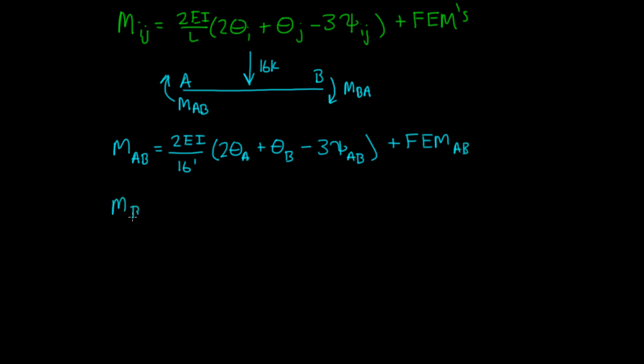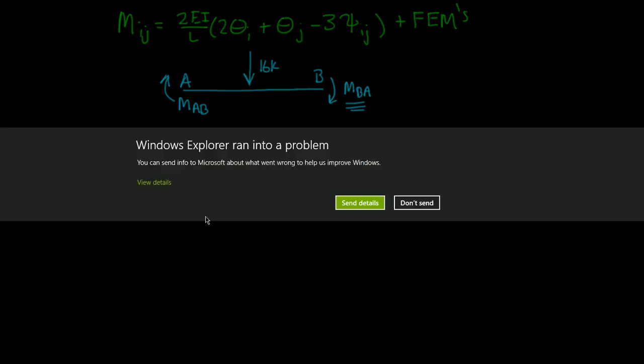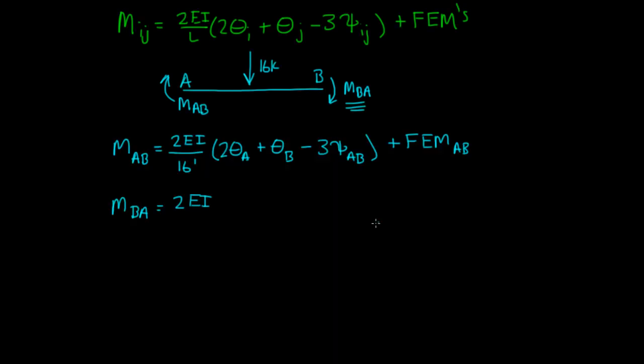And for M_BA, the equation is 2EI over L - L is 16 feet - times (2θ_B plus θ_A minus 3ψ_BA) plus the fixed end moment BA.